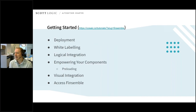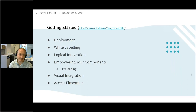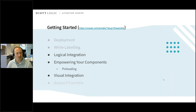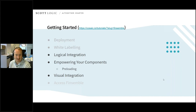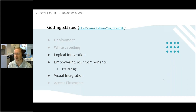FinSambl is quite a big beast — there's a lot to download. They have quite a good Getting Started tutorial; I'm going to signpost you to that — the link is on the slide here. This particular list is stuff covered in the Getting Started tutorial. I'm not going to talk so much about white labeling or deployment. I might cover the 'Access FinSambl' section slightly because it gives some insight into what's in each folder. I'm going to talk about logical integration, how you get legacy apps to communicate, and empowering your components — how you can preload information or behind-the-scenes code to run an application.